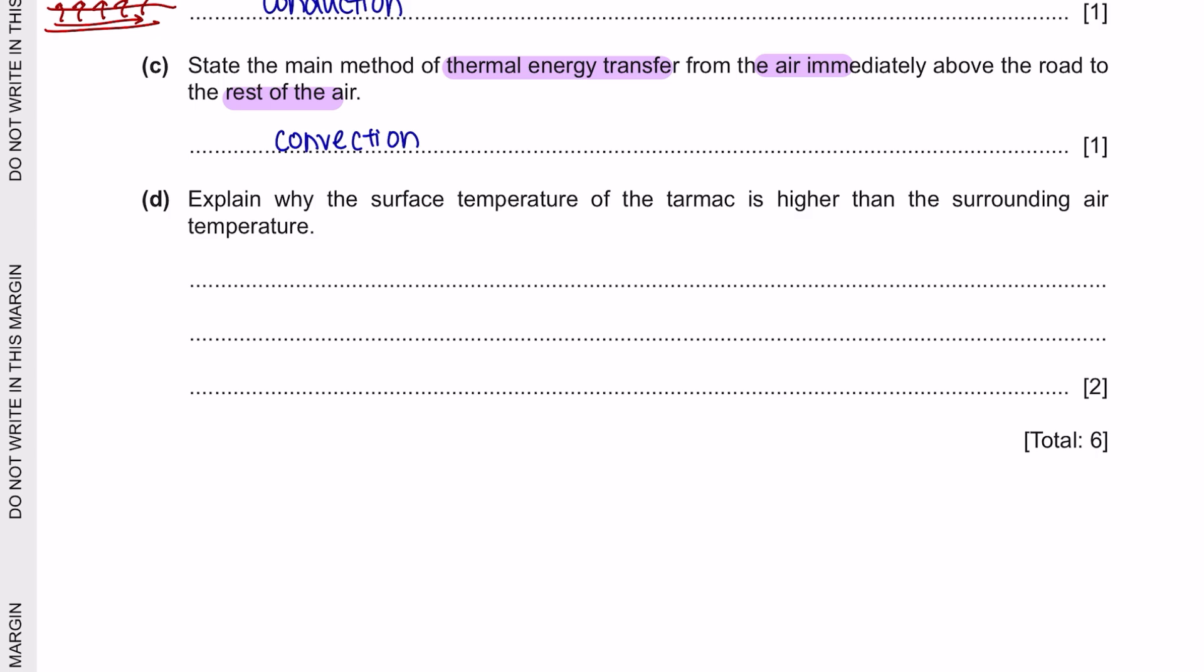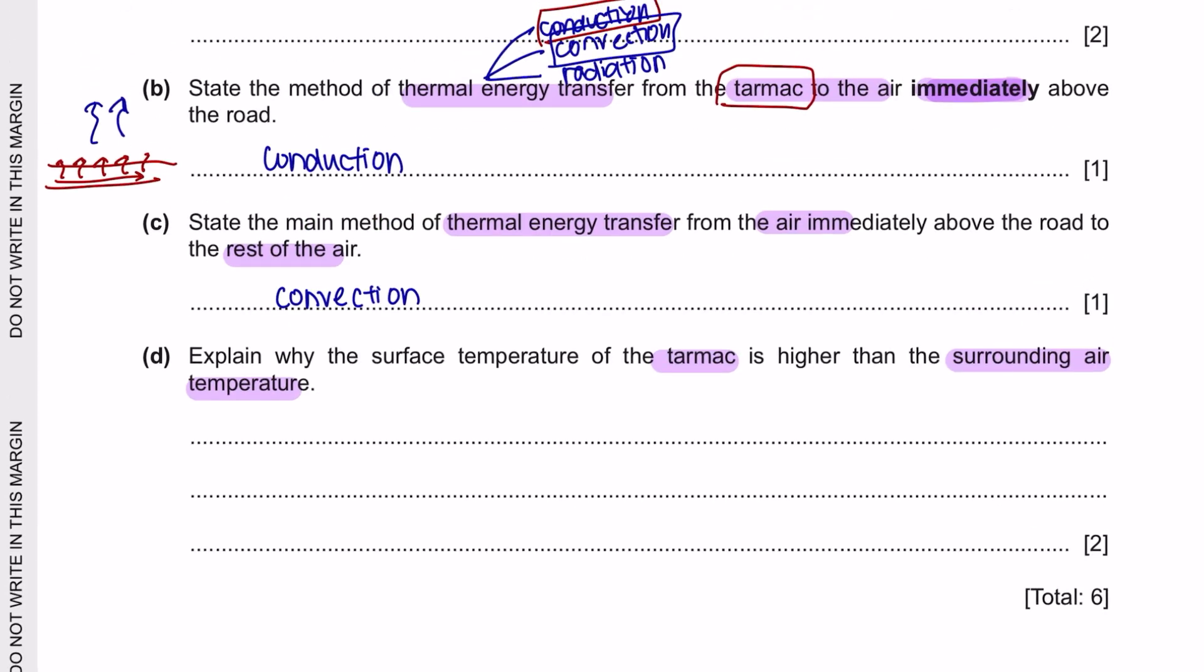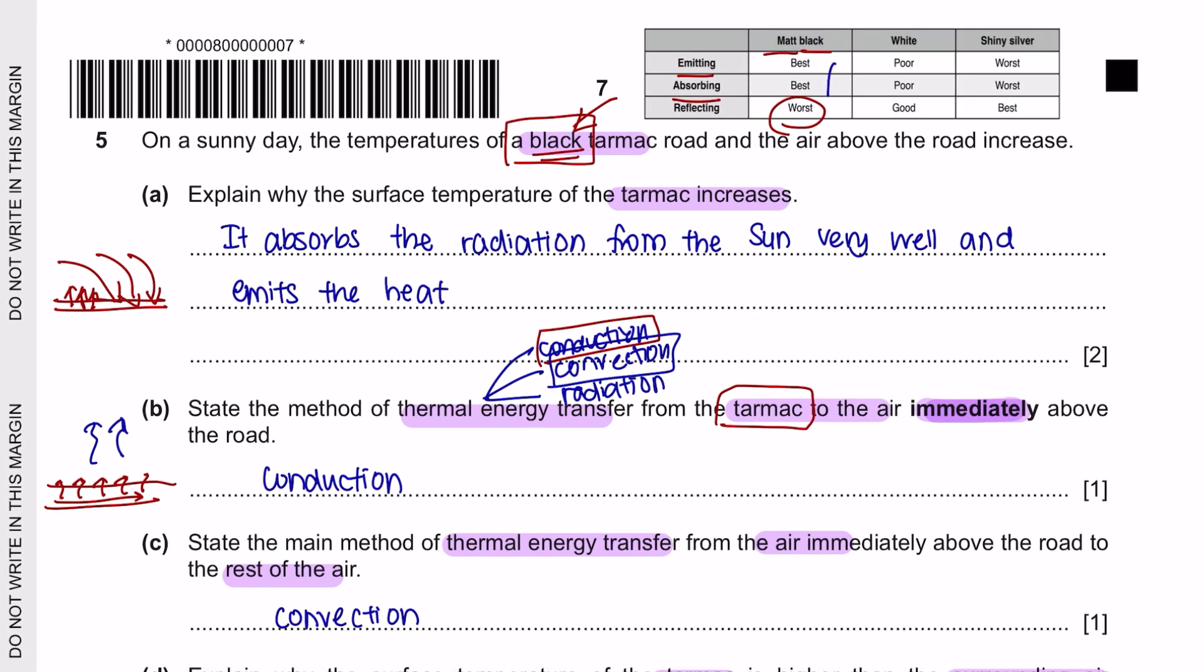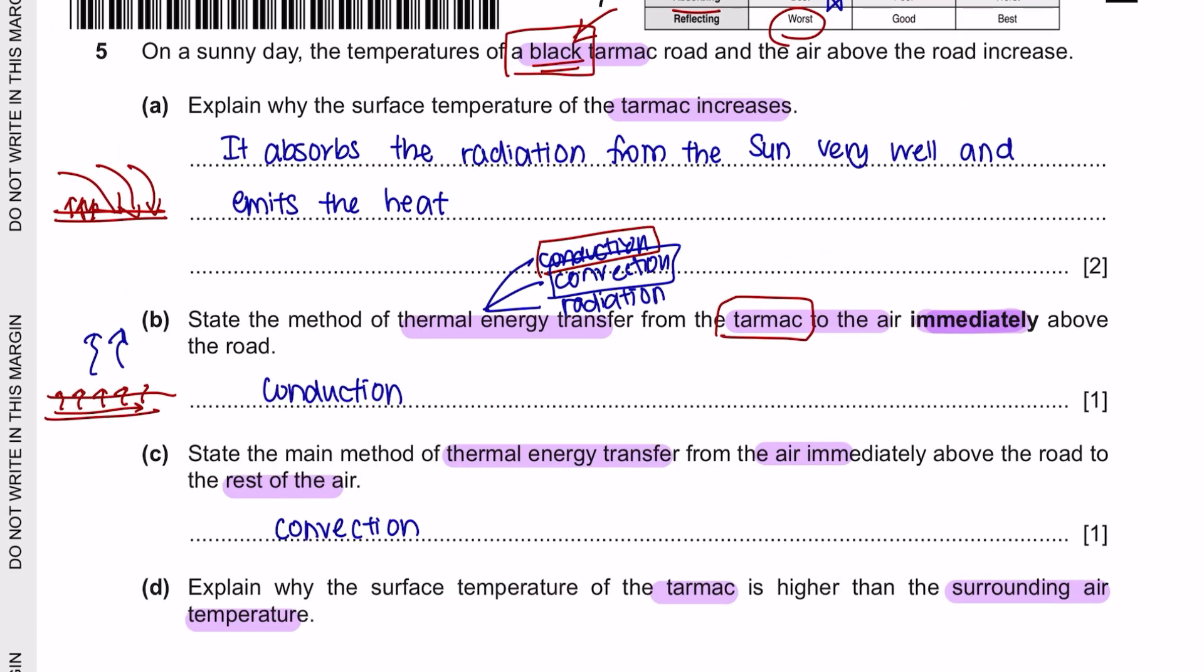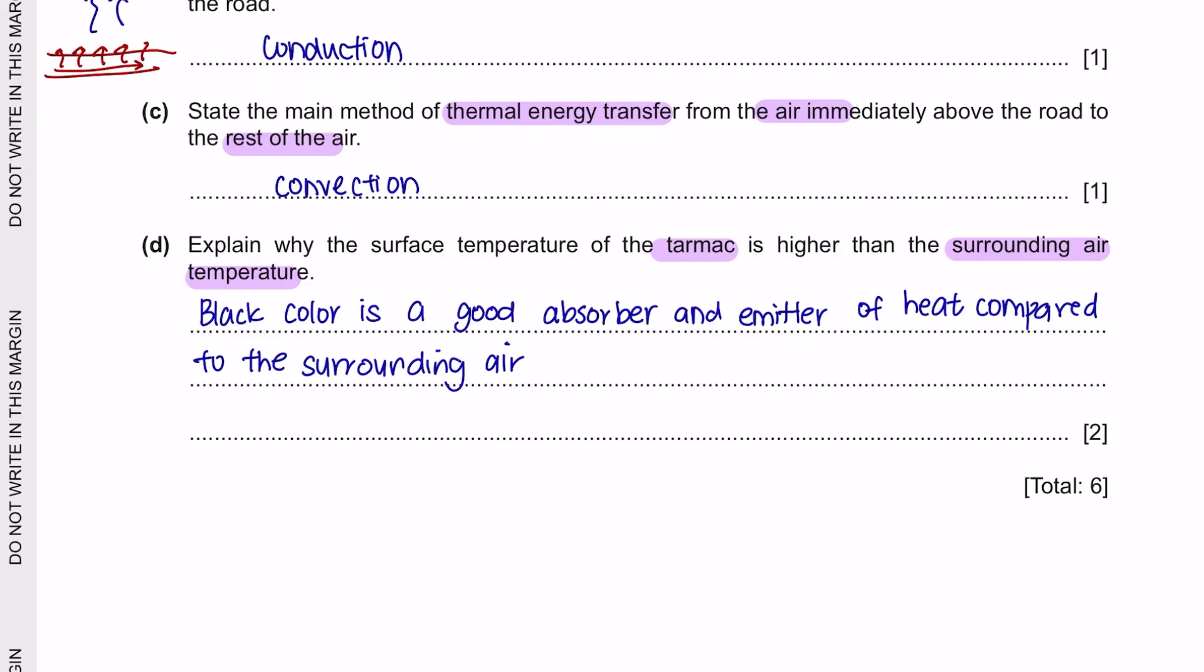Next question part D: Explain why the surface temperature of the tarmac is higher than the surrounding air temperature. So we can mention the property of black color when it comes to the temperature. So we can say that the surface temperature is always higher because black color is a good absorber and emitter of heat comparing to the surrounding air. Air is not the best absorber nor emitter of heat.